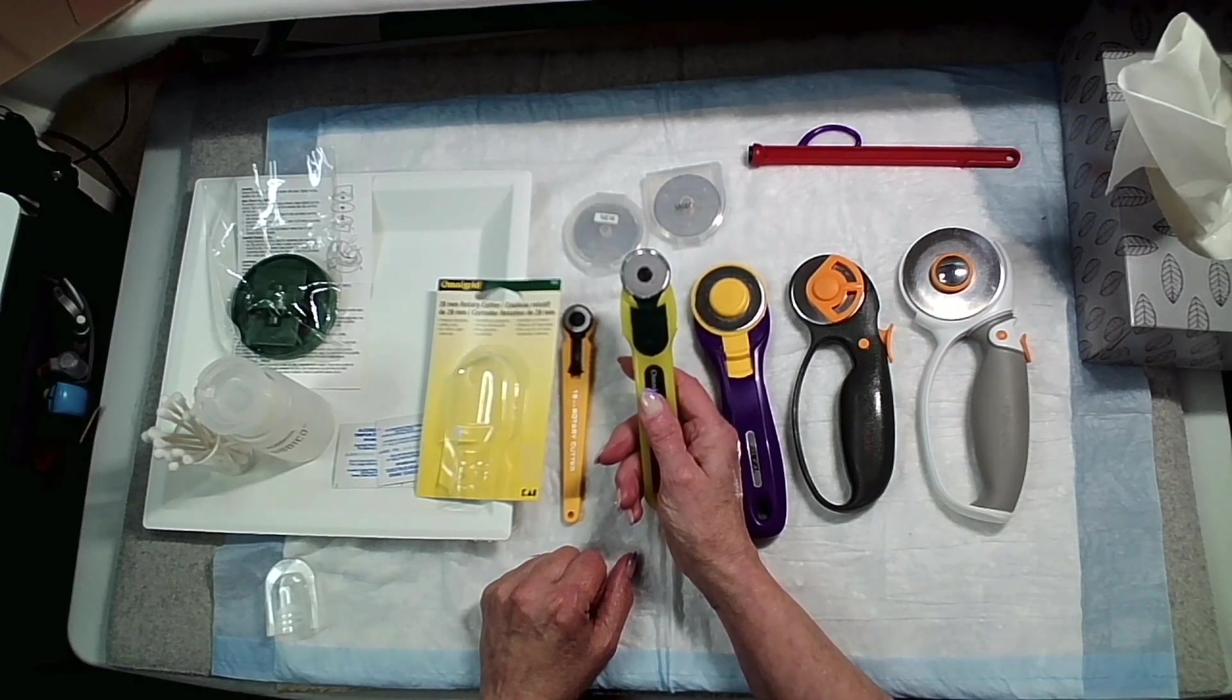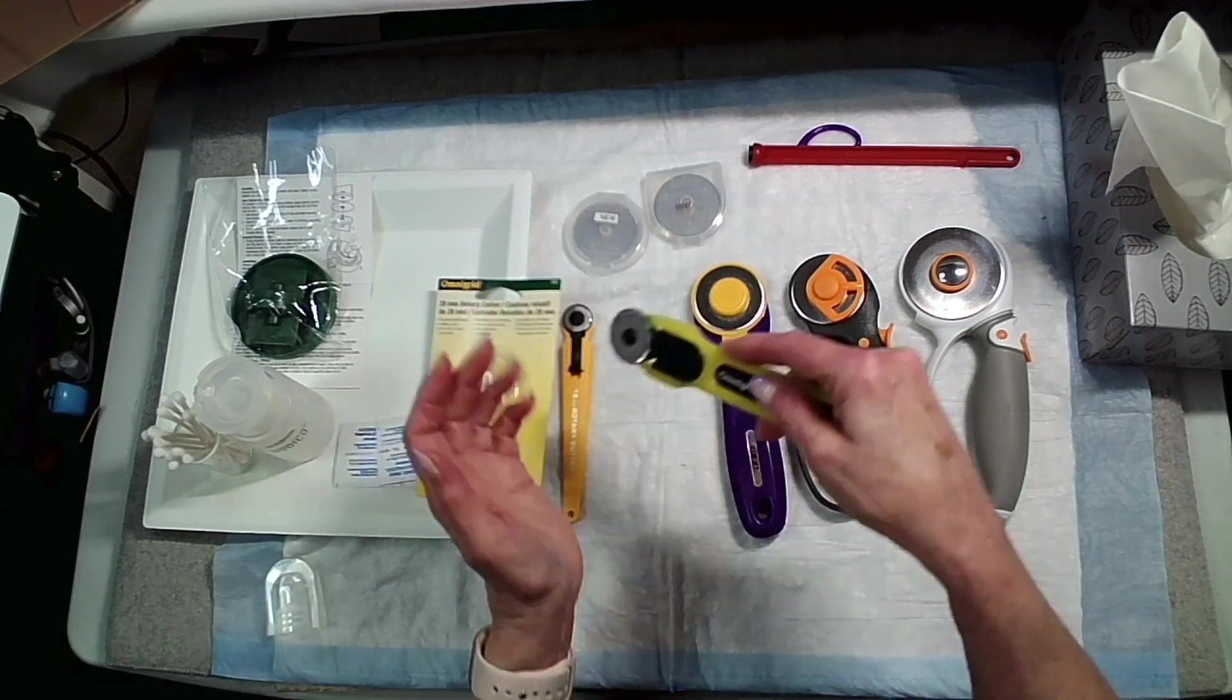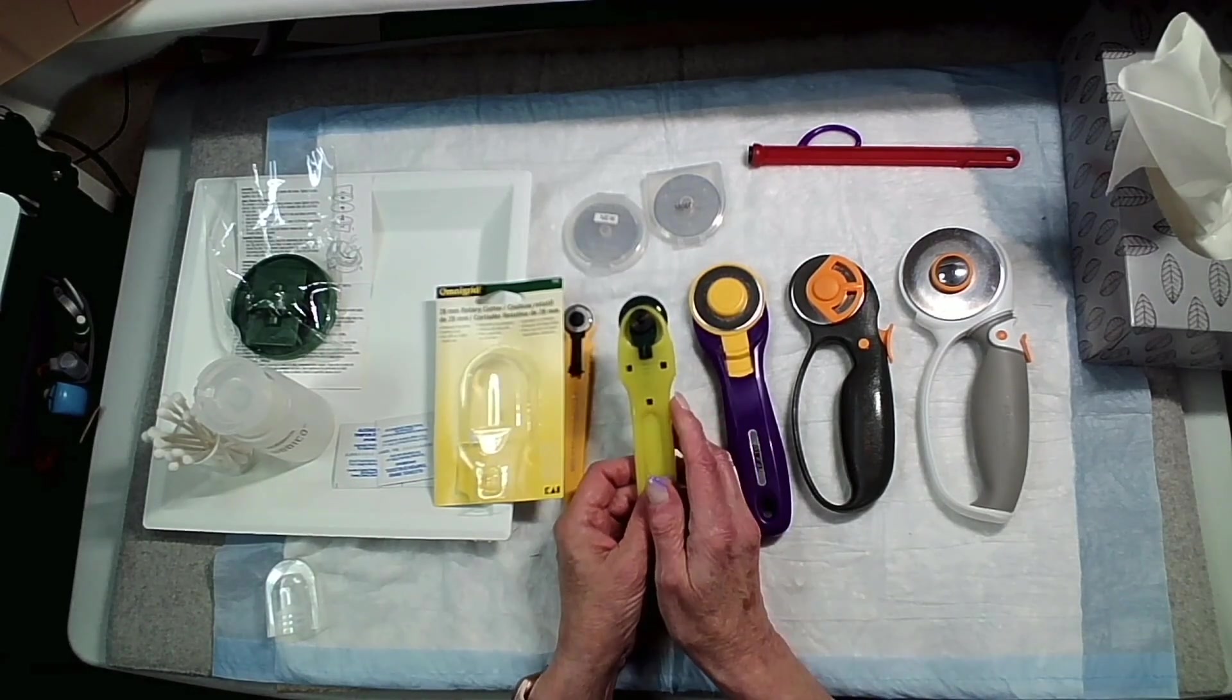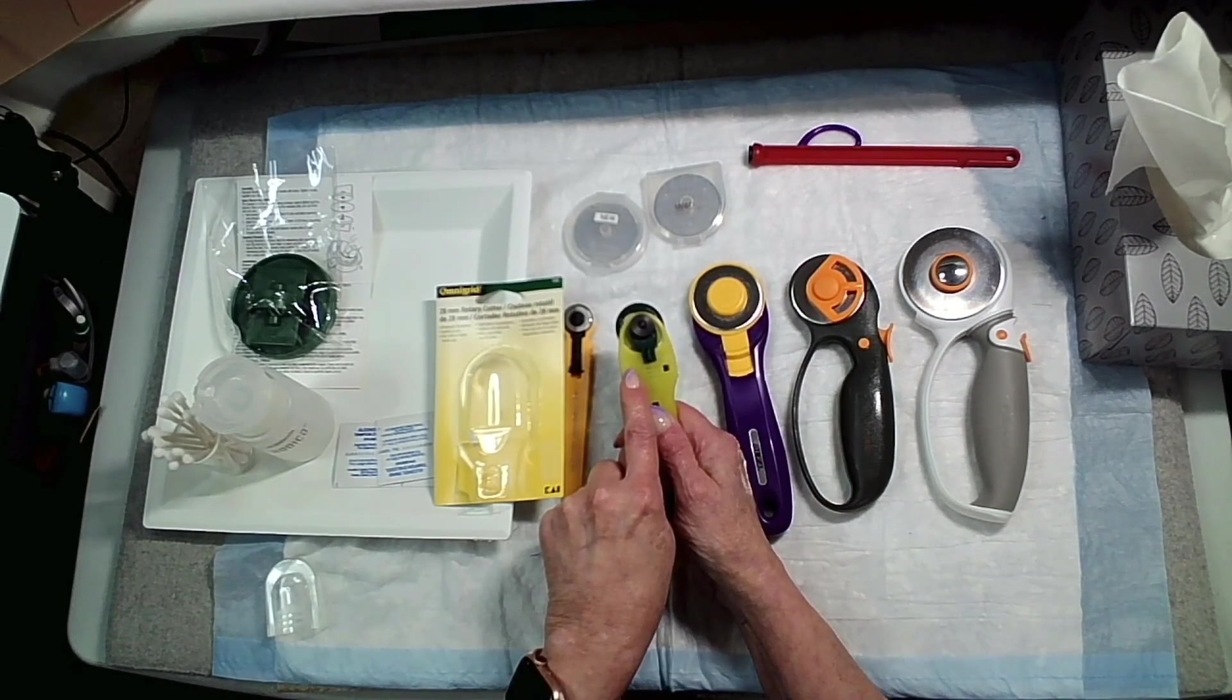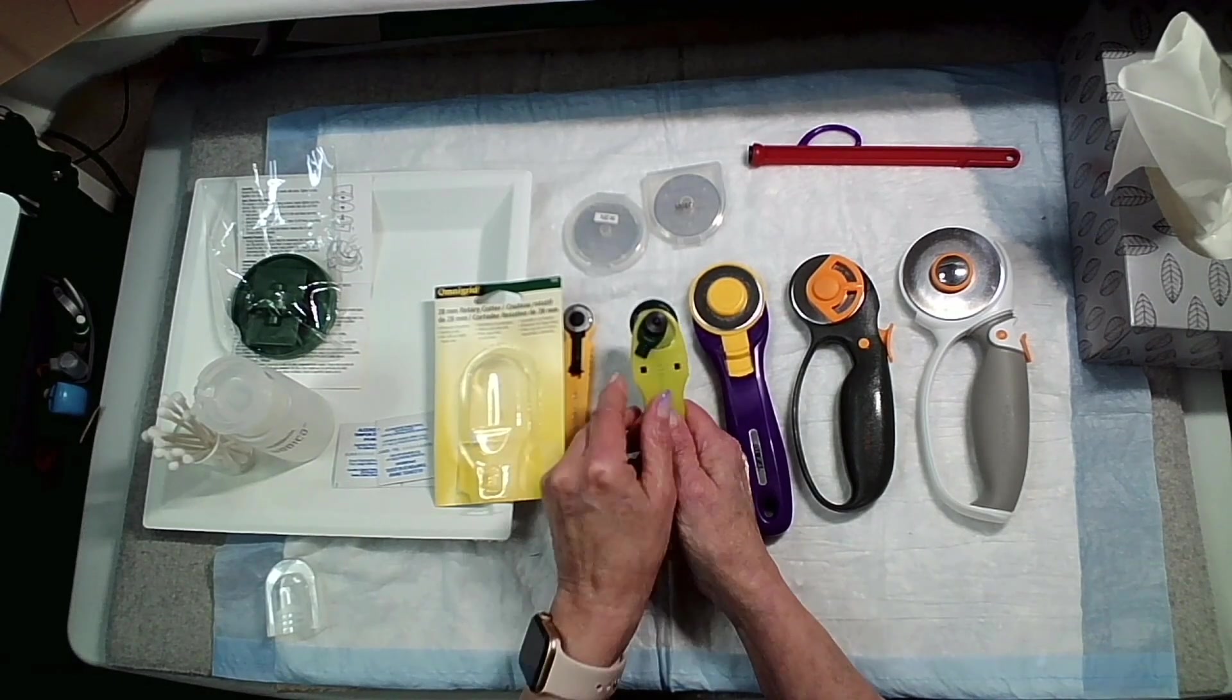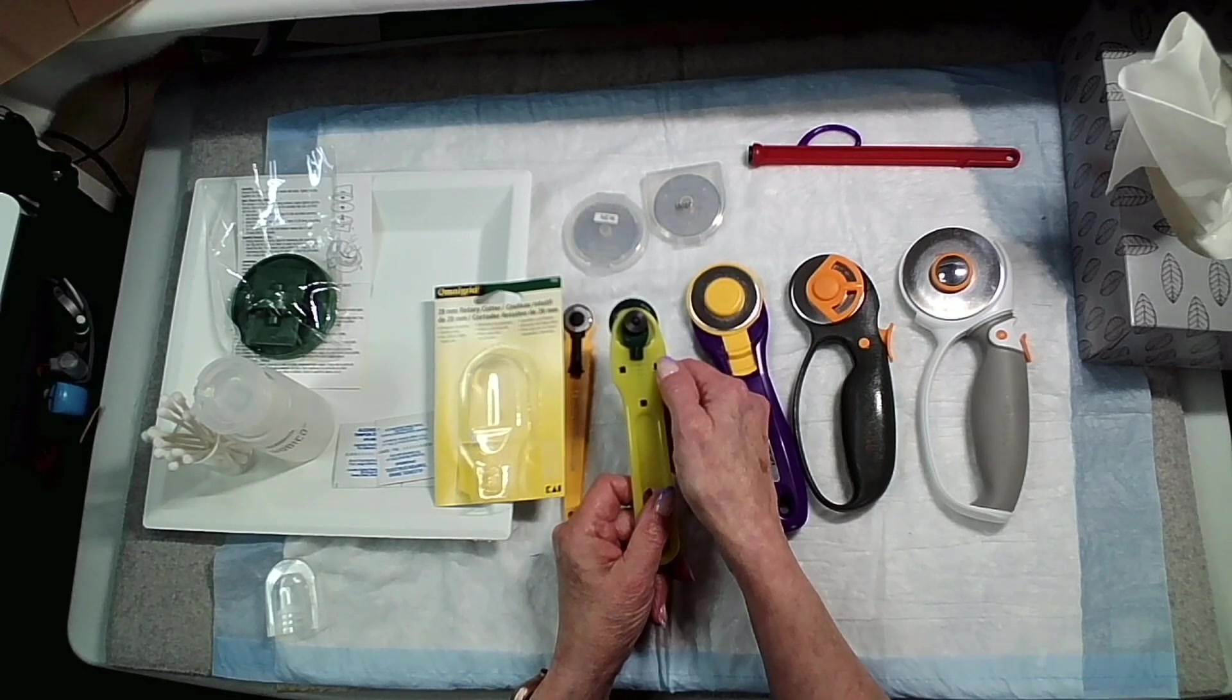Pressure sensitive means that the blade will not come out unless you put pressure on it. It can be used left or right-handed. On the back you move that dial. It says on here soft or hard. Soft means if you have it in that position it's going to cut single layer of fabric.